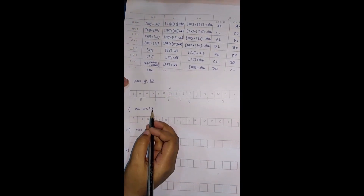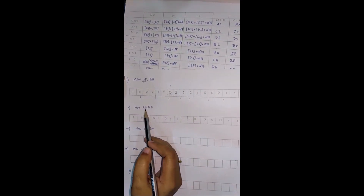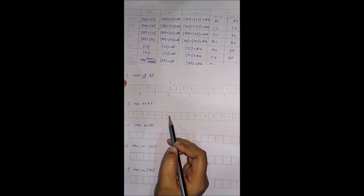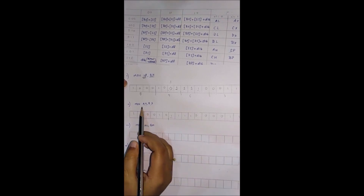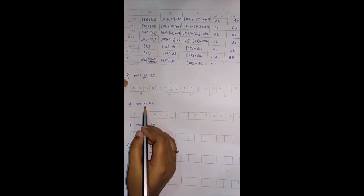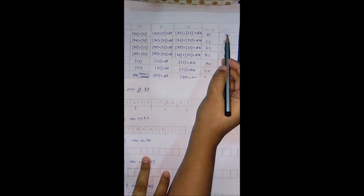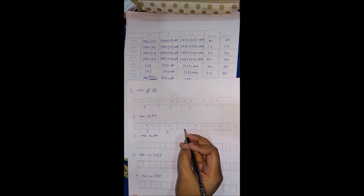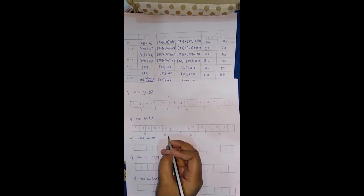The second question is MOV AX, BX. This is similar to the first — both source and destination are registers. Opcode is 100010. Direction is 1 (to register). Word is 1 (word transfer). Mod for BX is 11. Register field for AX is 000. R/M for BX is 011. Dividing into groups of 4: 1000, 1011, 1100, 0011 — giving 8, B, C, 3. So the answer is 8BC3.